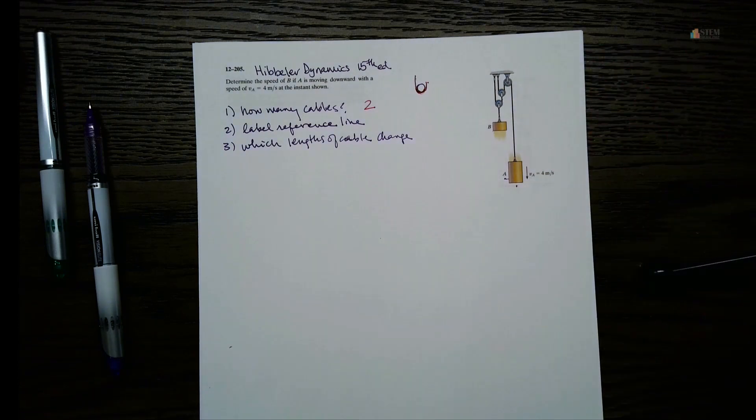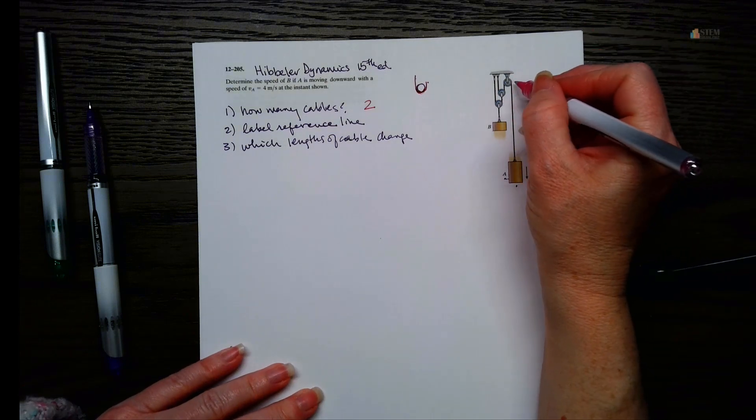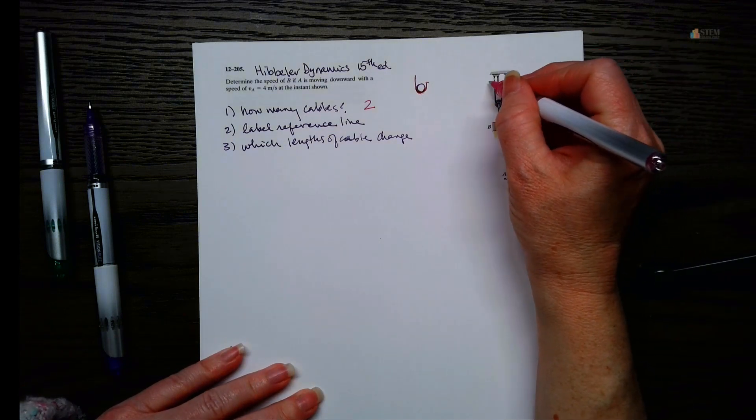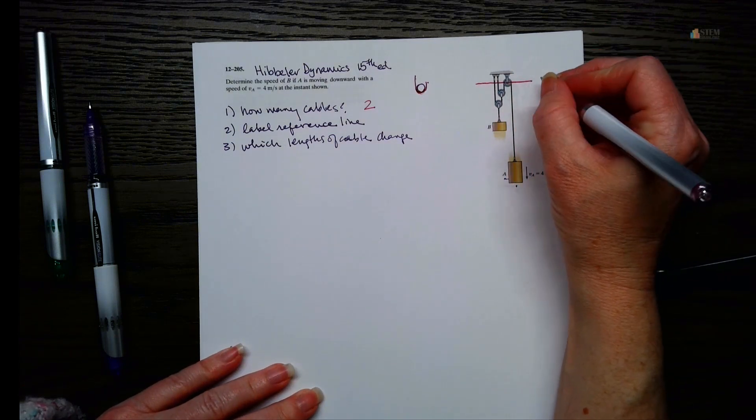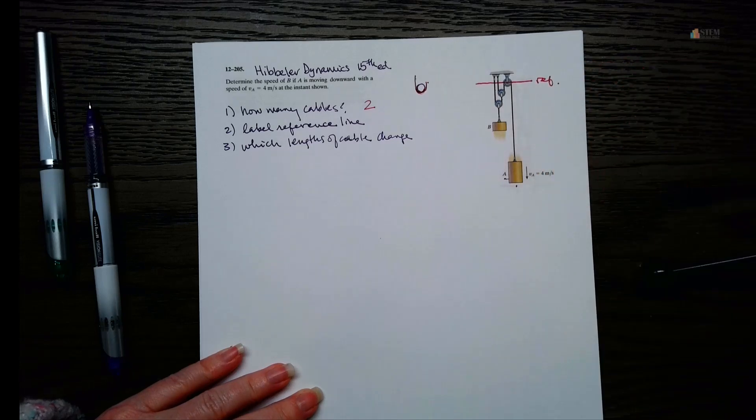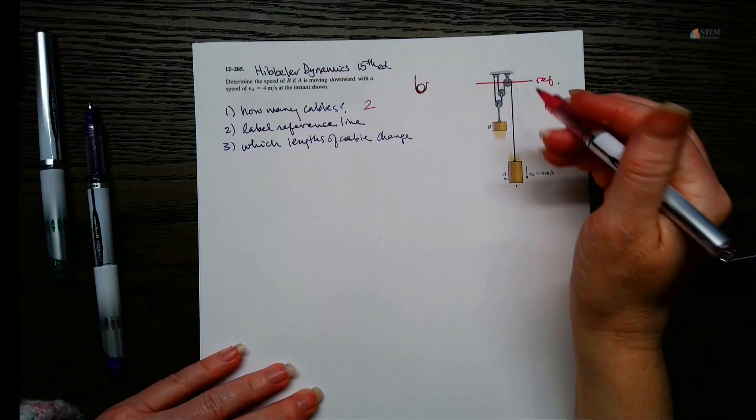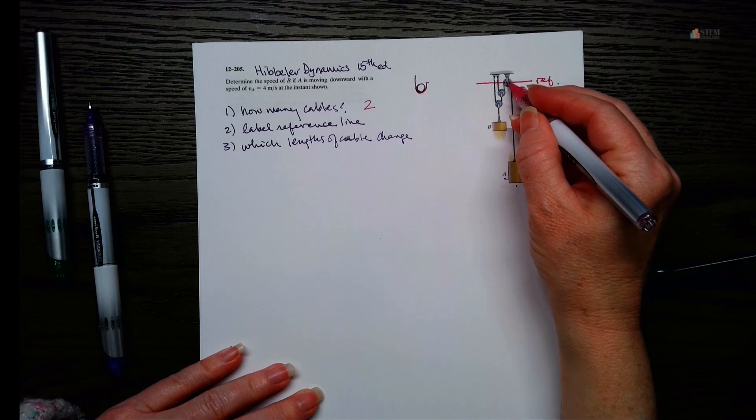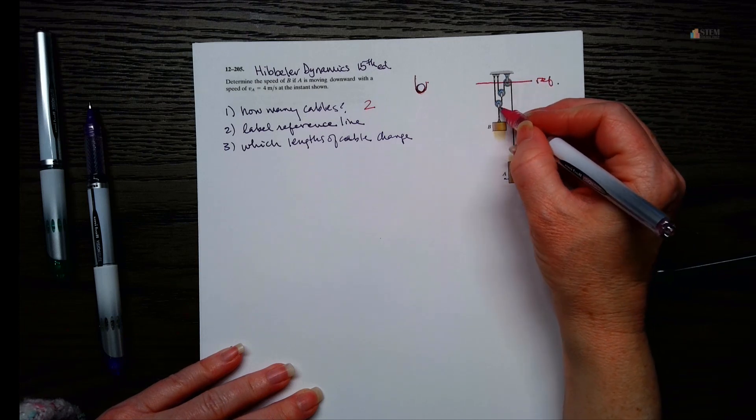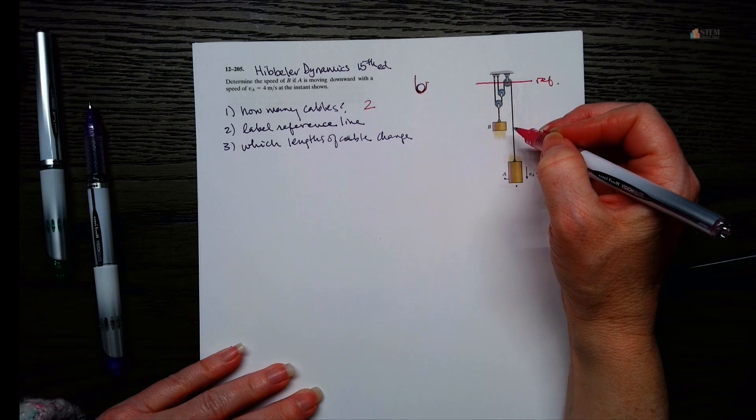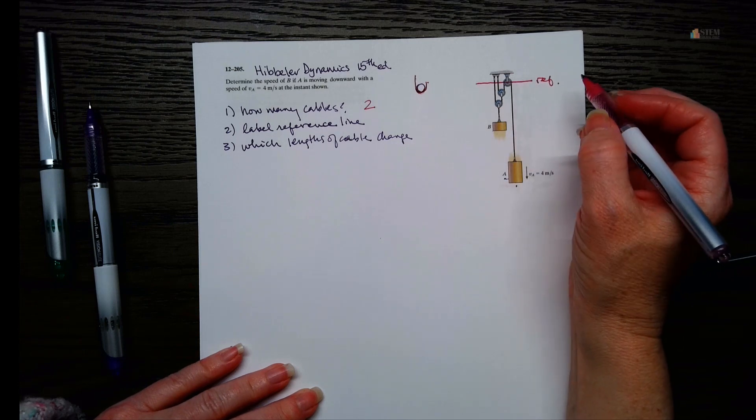We want a reference line that is going to be stationary, obviously. So, let's just make this a reference line. Okay, because that pulley right here is not moving, it's fixed in this position. These two can move, right? So we wouldn't want those to be the reference line. So that's a good reference line.